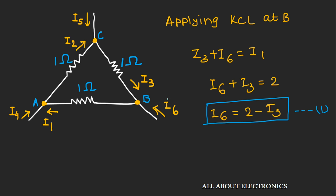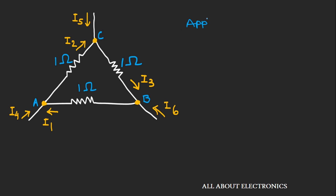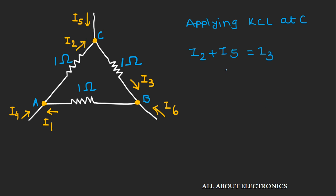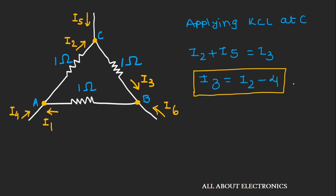To find current I3, we apply KCL at node C. Applying KCL at node C gives us: I2 + I5 = I3. We are given I5 = −4 amperes, so substituting: I3 = I2 − 4. Let's call this equation 2. However, current I2 is still unknown.